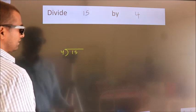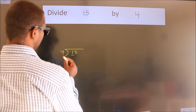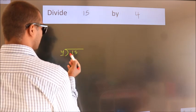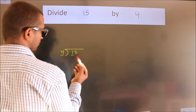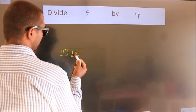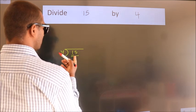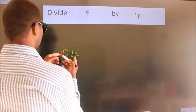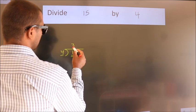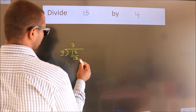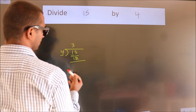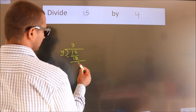Next. Here we have 1, here 4. 1 is smaller than 4, so we should take two numbers: 15. A number close to 15 in the 4 table is 4 times 3, which is 12. Now we subtract and we get 3.